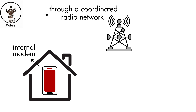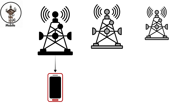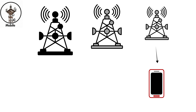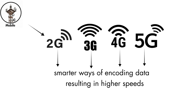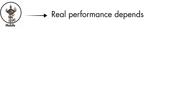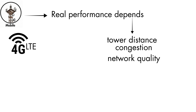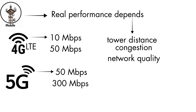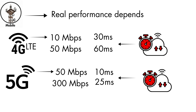The system works through a coordinated radio network. Your phone uses its SIM and internal modem to connect to the nearest cell tower. Data travels as radio signals to that tower, which is connected to the provider's core network through high-speed fiber. As you move, your connection is smoothly handed off from tower to tower. Each new generation — 2G, 3G, 4G, 5G — uses smarter ways of encoding data, resulting in higher speeds and quicker response times. On 4G LTE, users typically get around 10 to 50 Mbps. Modern 5G commonly delivers 50 to 300 Mbps. Latency is about 30 to 60 milliseconds on 4G and 10 to 25 milliseconds on 5G under good conditions.